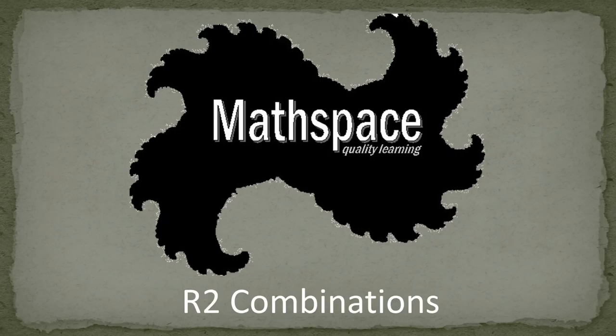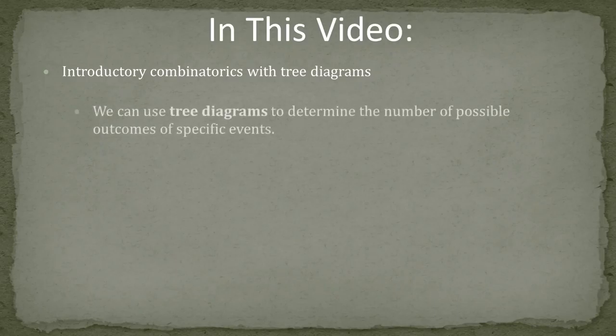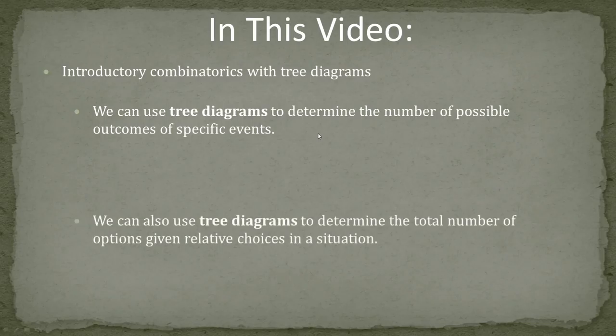Welcome to the second lecture in our review unit on Algebra 1. Today's topic is combinatorics. I'm your instructor Josh Schott with MathSpace Tutoring. In this video we're going to introduce combinatorics using tree diagrams. We're going to learn that we can use tree diagrams to determine the number of possible outcomes of specific events, and also to determine the total number of options given relative choices in a situation.